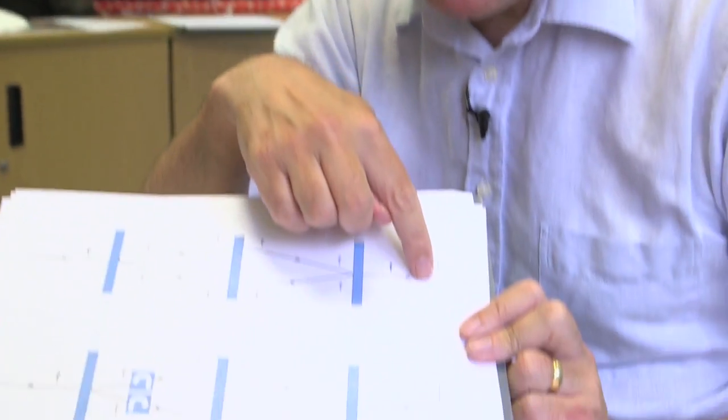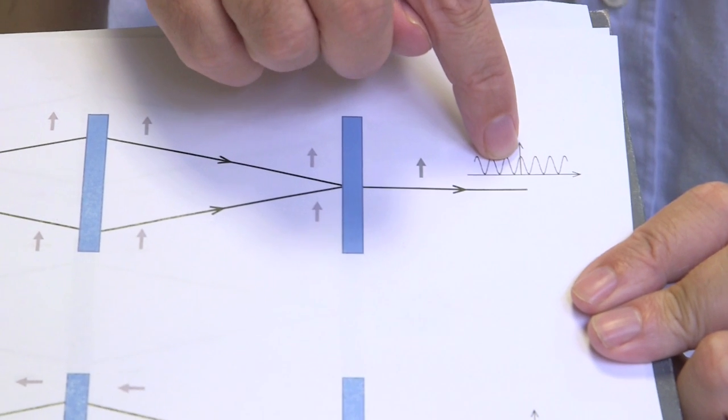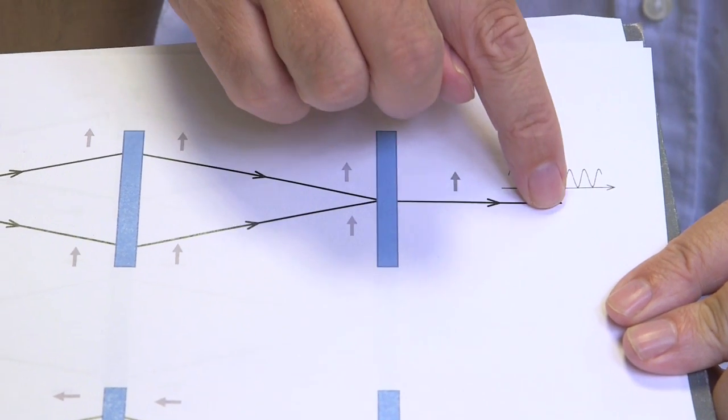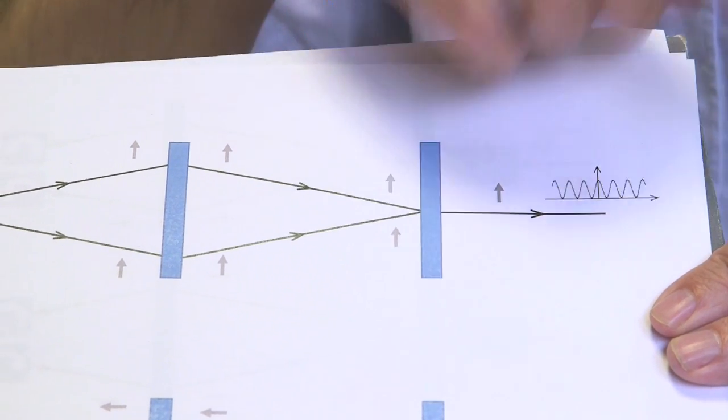In other words, by messing around with the path difference we can create one of these interference patterns that sometimes we get lots of neutrons coming and then we change the apparatus a little bit and suddenly we get very few neutrons coming. So it's a classic interference experiment. It's one of the classic ways of showing this fundamental property of quantum mechanics that things that we think of as particles, neutrons, actually have wave-like properties as well.